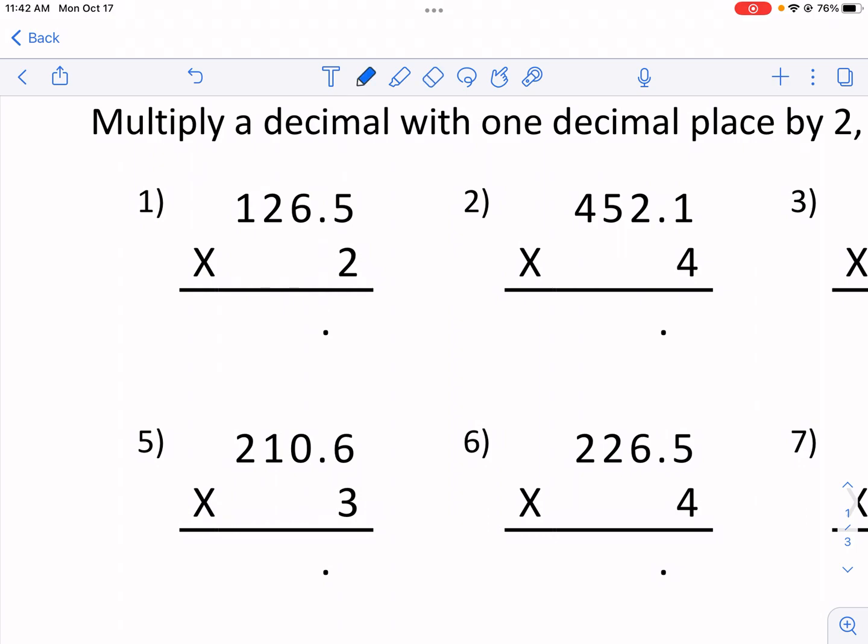Now if there was a 0.2 right here, so a decimal place in front of that 2, then we would need to move this over one more. Okay, so the total number of places that you move this decimal in the final result, in the product,